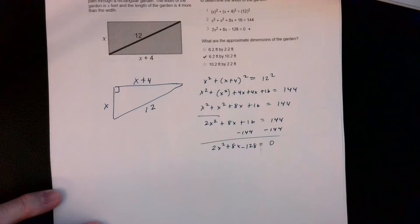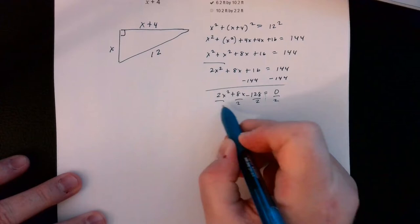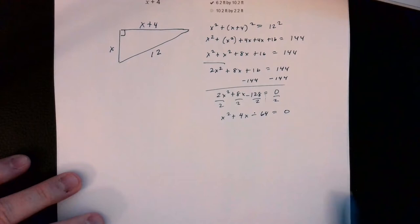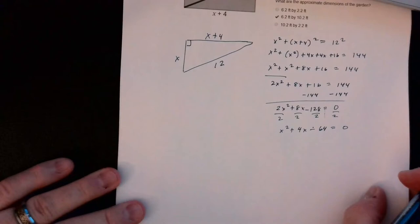From here it's just simplifying. I'm going to divide everything by 2 first, and that gives me x squared plus 4x minus 64 equals 0. At this point there are no factors of 64 that subtract to 4, so we're going to have to use the quadratic formula.